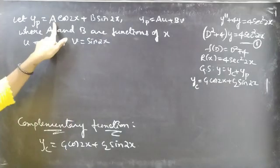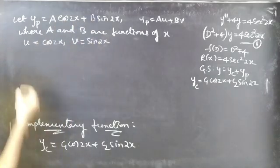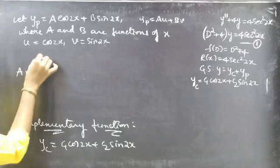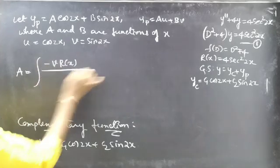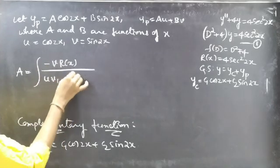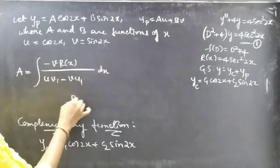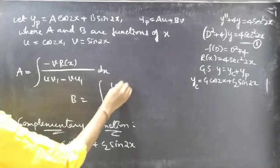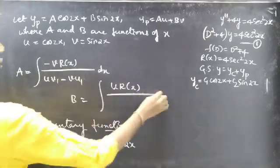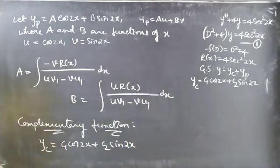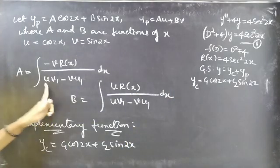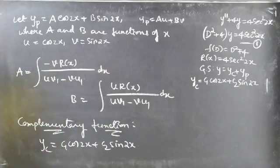So with b equal to 2, we have yc equal to c1 cos 2x plus c2 sin 2x. Let u equal cos 2x and v equal sin 2x. We will find a and b using the variation of parameters formulas: a equals the integral of minus v times R of x divided by uv1 minus vu1, dx, and b equals the integral of u times R of x divided by uv1 minus vu1, dx. First we will find uv1 minus vu1.